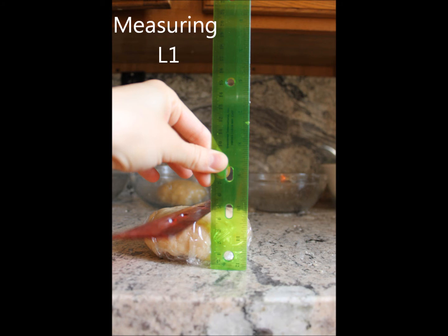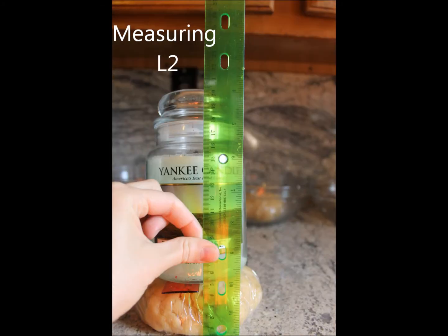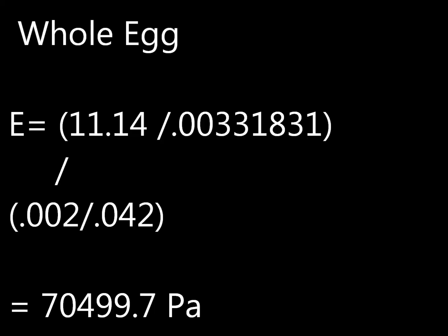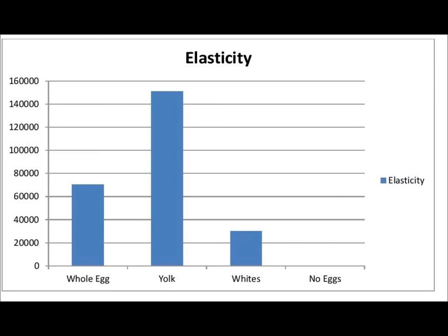After that, I divided all that by delta L, which is the change in height after applying the glass jar, divided by the initial height before applying the jar. Now scientifically, high elasticity means tougher dough, so the dough with the lowest elasticity is the dough easiest to work with. My experiment showed that the lowest elasticity was the dough with egg whites only.